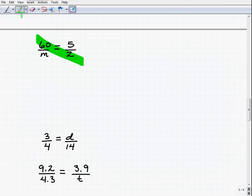So we have 60 times 2. Is that equal to 5m? Of course it is because this is a proportion. So 5m must equal 60 times 2. We have 5m equals 120.